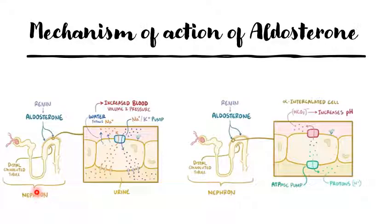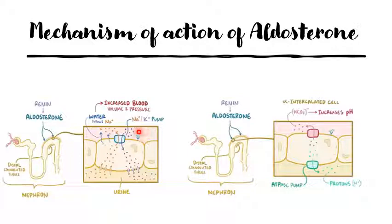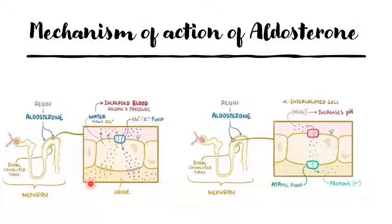The mechanism of action of aldosterone is in the distal tubules of our nephrons, where we have cells called principal cells. On the principal cells' basolateral surface, we have receptors for aldosterone and also sodium and potassium pumps. When aldosterone binds to these receptors, it stimulates these pumps to work even harder. The pump takes potassium from the blood and excretes it into the urine, and conversely takes sodium from the urine and drives it into the blood.